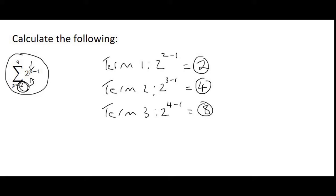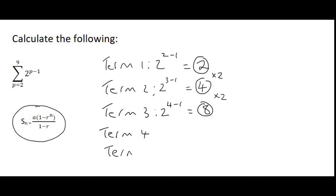Now we analyze these three numbers and we ask ourselves if that is arithmetic or geometric. Well, it is geometric because we are multiplying by 2 each time. So now we don't have to go all the way until we get to p equals to 9. We can just use the geometric sum formula, which is this one over here. Of course, you don't have to use the formula, but that's going to take a lot of time.